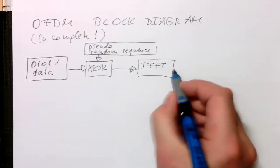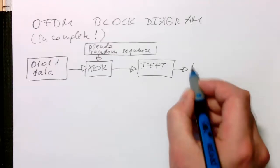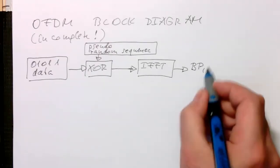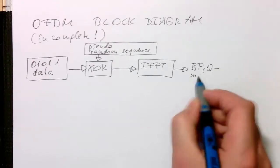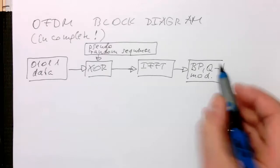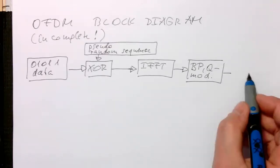Then we do our bandpass modulator, also a quadrature modulator, so our bandpass quadrature modulator. And then here we are adding our cyclic prefix.